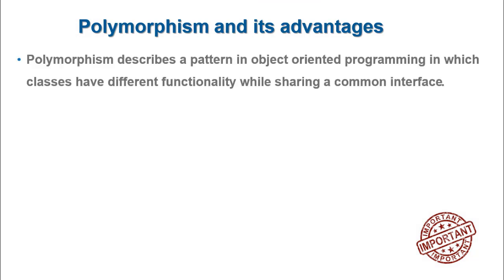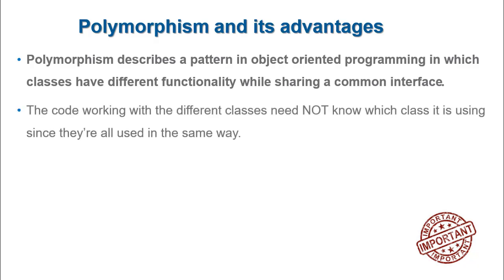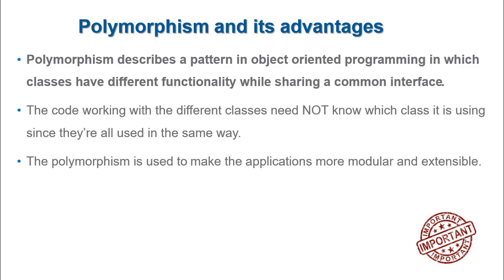Now, let us discuss about why polymorphism is so important in design and development of a software. Polymorphism describes a pattern in object-oriented programming in which classes have different functionality while sharing the same interface. The beauty of polymorphism is that the code working with different classes need not know which class it is using since they are all used in the same way. In programming world, polymorphism is used to make applications more modular and extensible. Loose coupling between the objects is possible since interchangeable objects can be used.